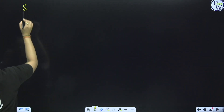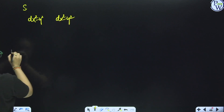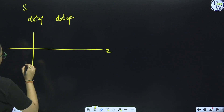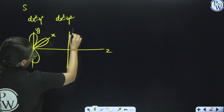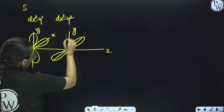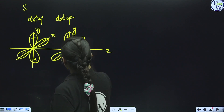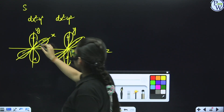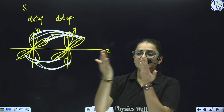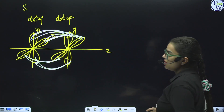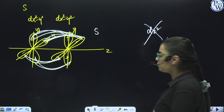For the delta bond, take the case of dx²-y² and dx²-y² on the z-axis. The positive lobes combine with positive lobes and negative with negative, creating four overlapping regions — this is delta bond formation. Always remember that dz² will not form a delta bond. This was about the overlapping concept.